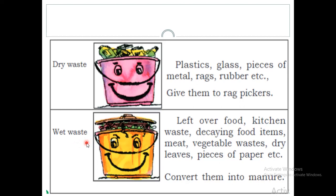Wet waste means leftover food which we leave in our home, kitchen waste, decaying food items, meat, vegetable waste, dry leaves, and pieces of paper. These can all be collected in one dustbin and then converted into manure.